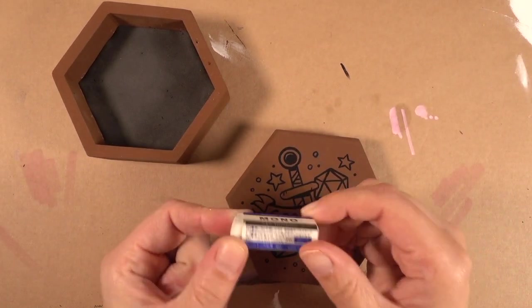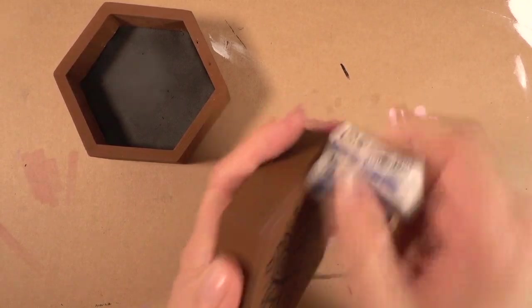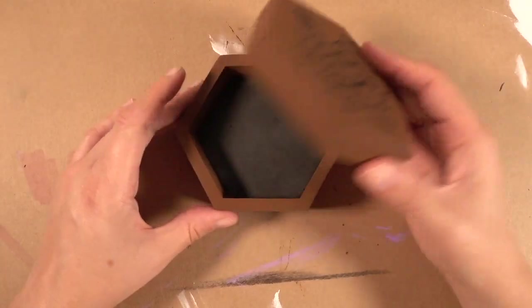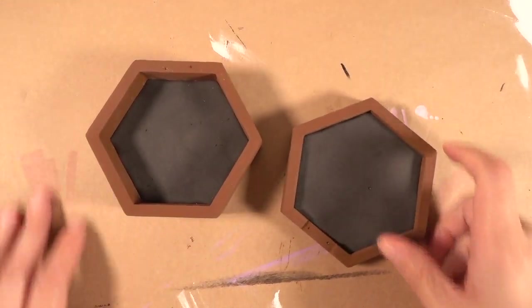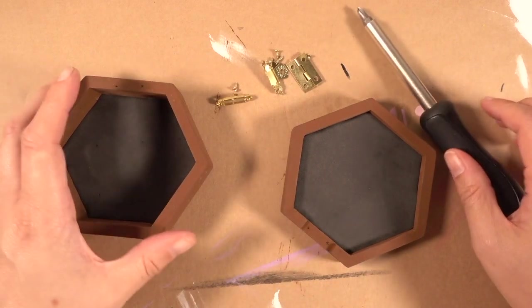Now that the design painted onto the top of the box is fully dried you can gently erase over it to get rid of any left behind pencil marks. And the last thing to do is reattach all the hardware.